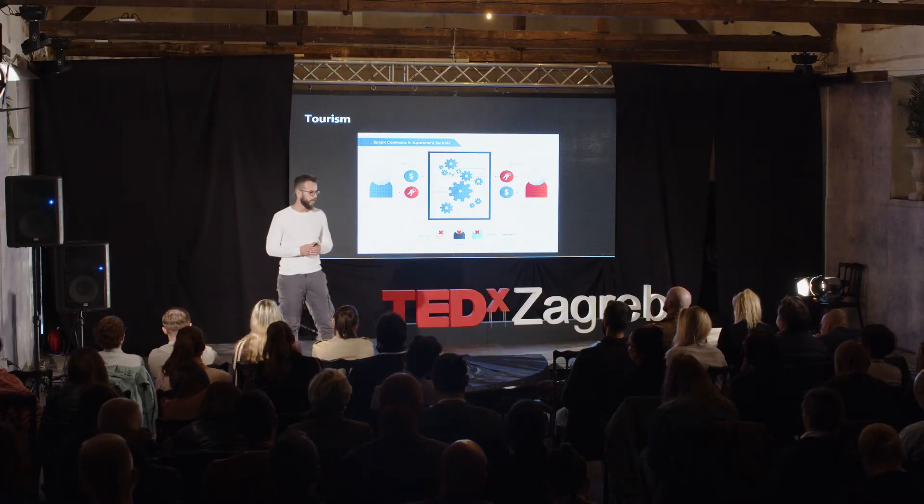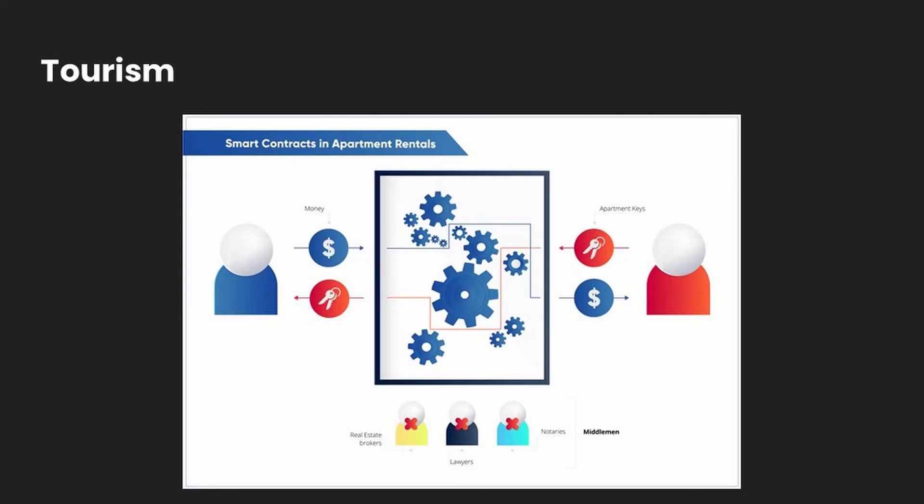Smart contracts in apartment rentals — a big topic here in Croatia. Imagine you have a smart lock on the apartment that you rent. Everything can be done autonomously and automatically by smart contracts. Smart contracts are our logic — you can put the key or a pin into a smart contract. On the other side, the visitor puts money, you set a time — let's say tomorrow at 10 PM — and the pin will be ready on their device, and they can automatically open the apartment, without middlemen, without lawyers, and without expensive real estate brokers.